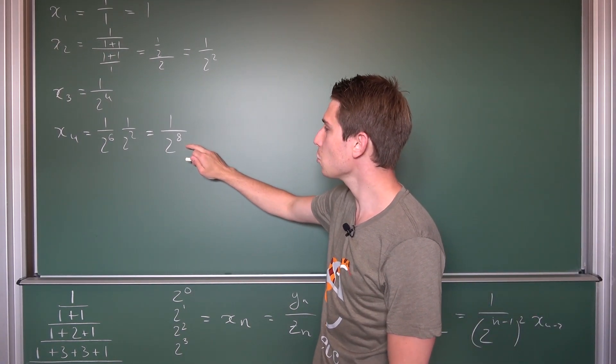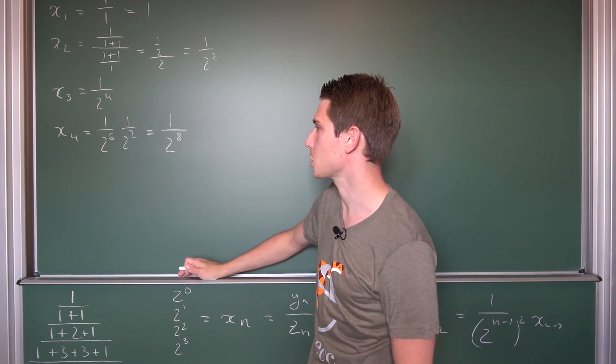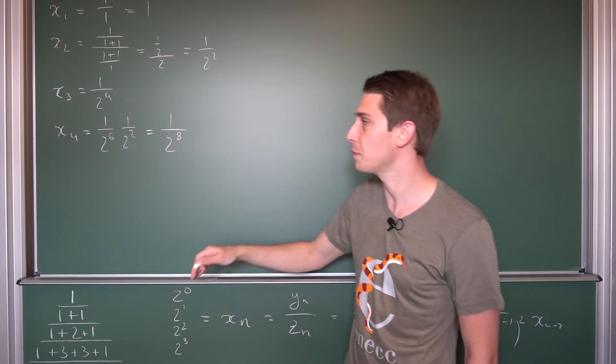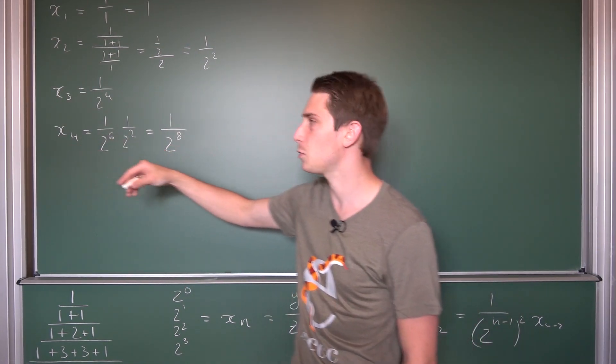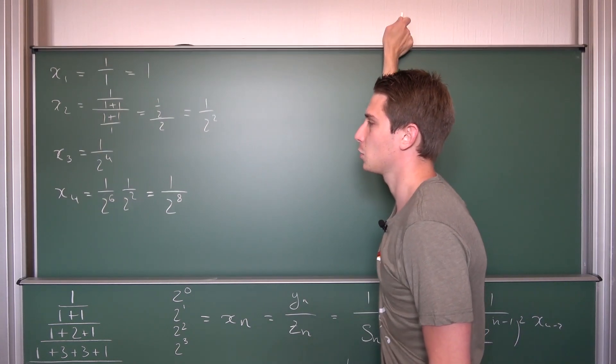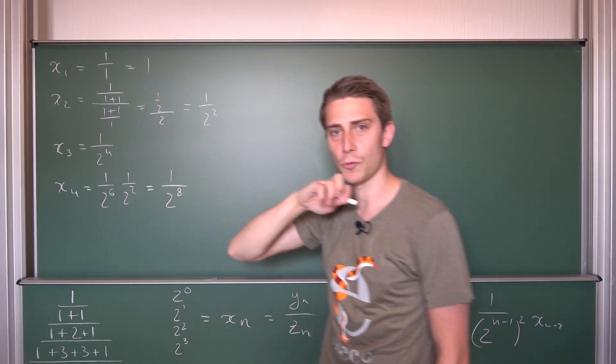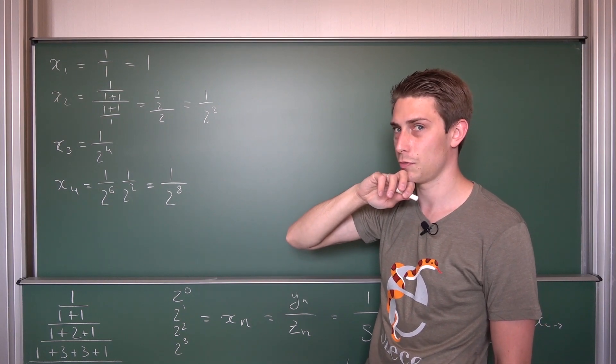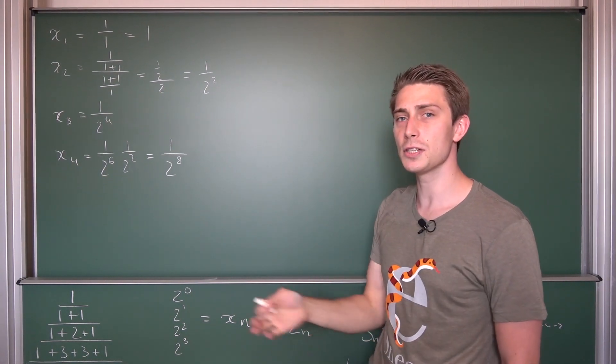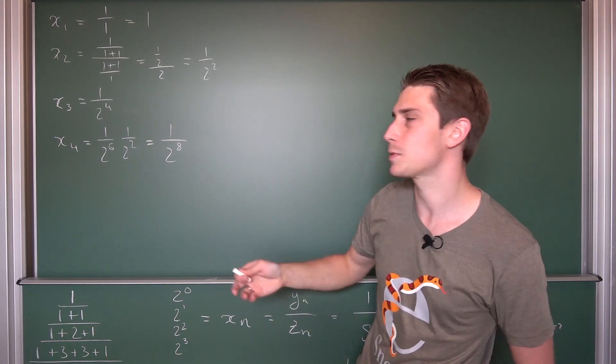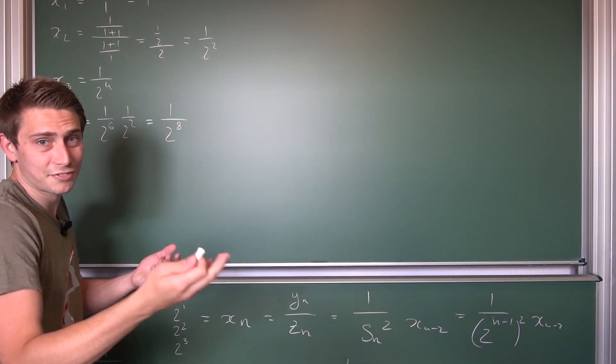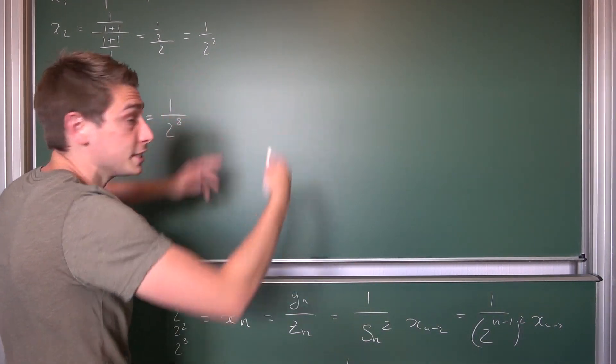Now one could already start doing a few assumptions here. For example, well, our exponent here is going to be just 2n, for example. 1 over 2 to the 2nth power works for n being equal to 4. How about n being equal to 3? Oh, 1 over 2 to the fourth power. No, this is not 2n. 4 is not equal to 6, at least not in the natural numbers. So this doesn't work out.